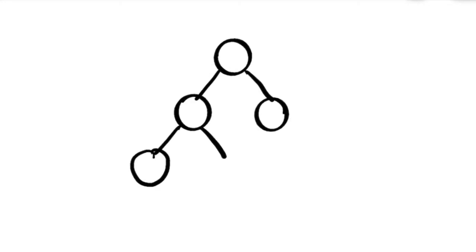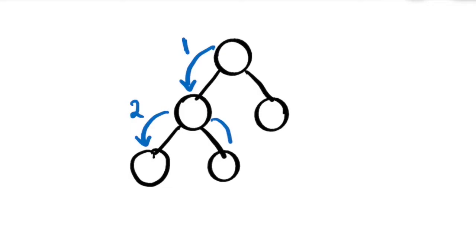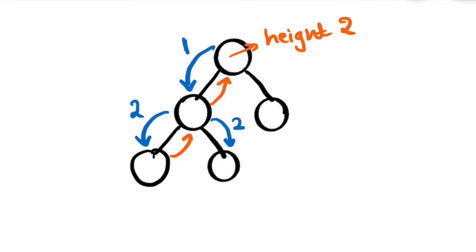Now let's see how we can solve this particular problem. We will take another binary tree. We will start from its root node and start going to its left nodes or subtrees, keeping on incrementing the height. The initial height will be 0, and we will increment it to 1 when it first goes to its left child node, and so on — 2. On its way back, while returning from the recursive function, it will return the maximum height found so far from its left subtree. The maximum height it was able to get was 2. Now let's move to its right child node to see if we can find a height greater than 2.